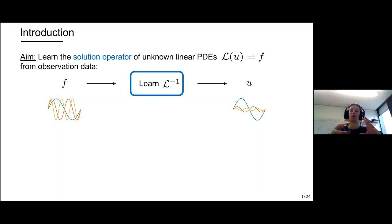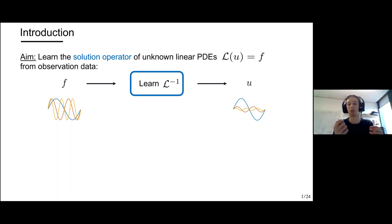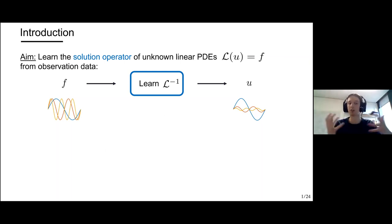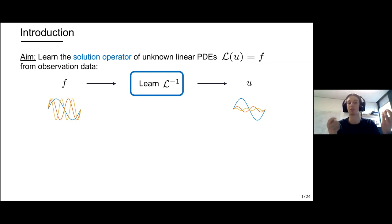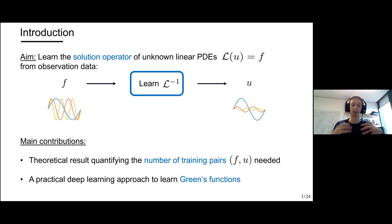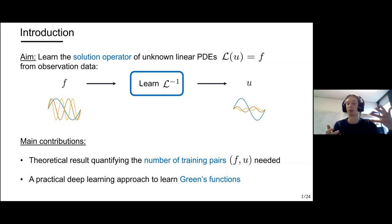The idea is that you have a system or experiment that you can force using a forcing term f that you control. From this, you do measurements and observe the system response u. Ideally, from a couple of these training pairs f and u, you'd like to learn the solution operator L inverse that associates the system response to the forcing term f.